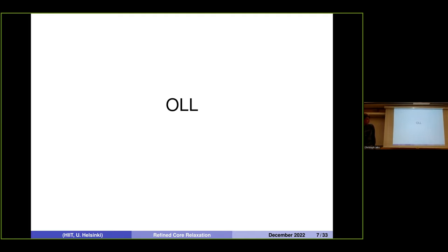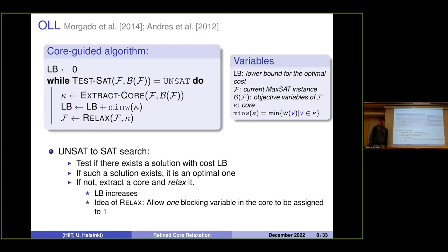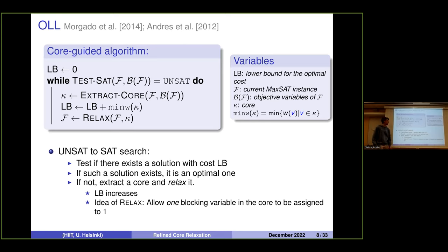In core-guided algorithms, we do lower-bounding search to obtain the optimal solution. We initialize the lower bound to 0 and try to find a solution with cost equal to the current lower bound — if found, it is optimal. If no such solution exists, we extract a core, which increases the known lower bound. The core is then relaxed: we transform the instance so we don't find the same core again, and each new core pushes the lower bound toward the optimal solution.